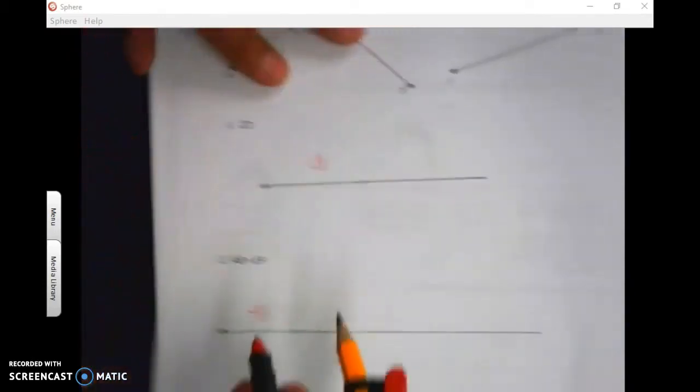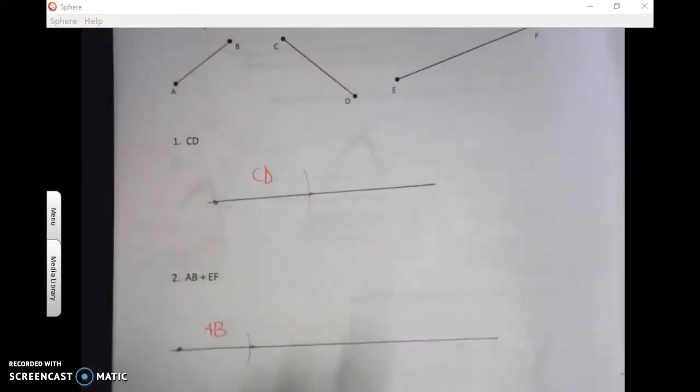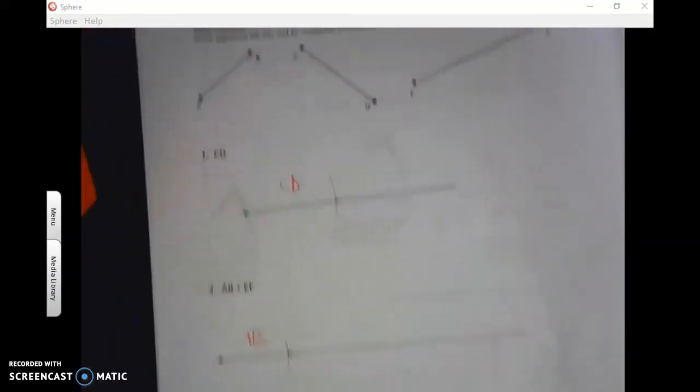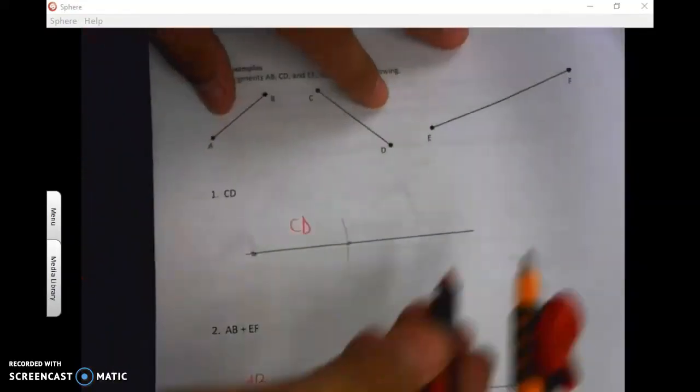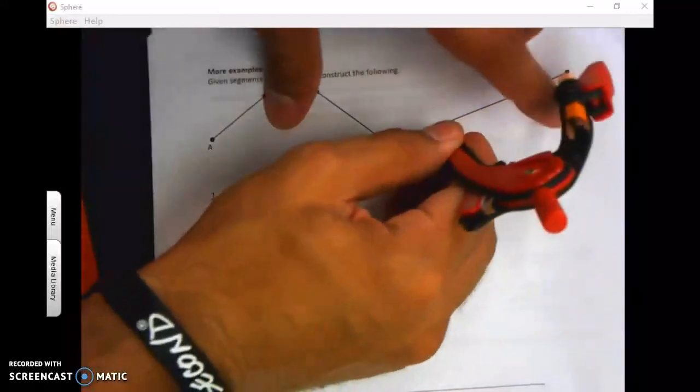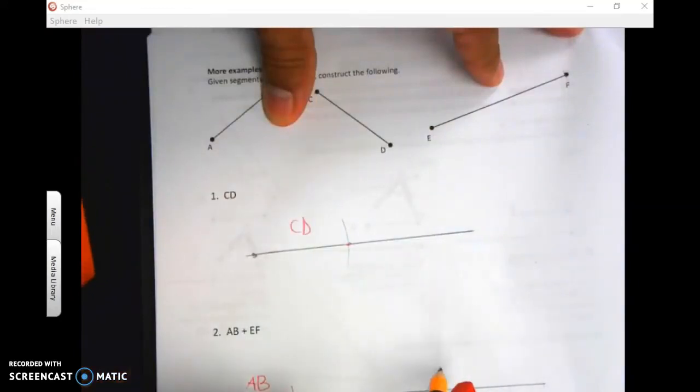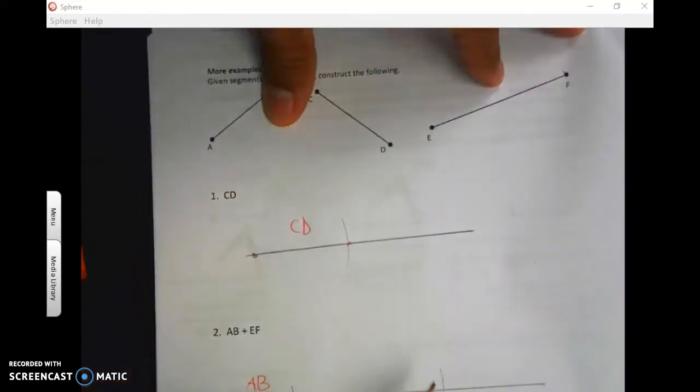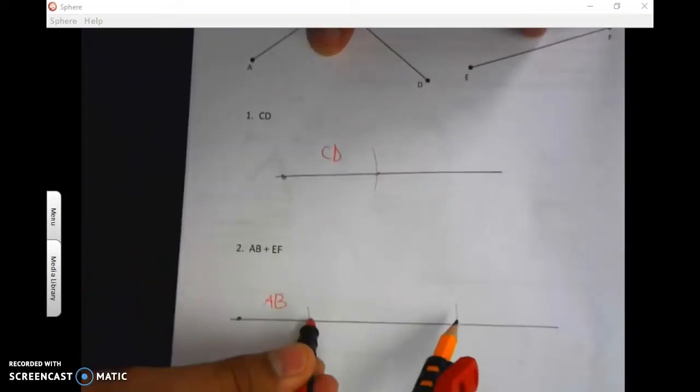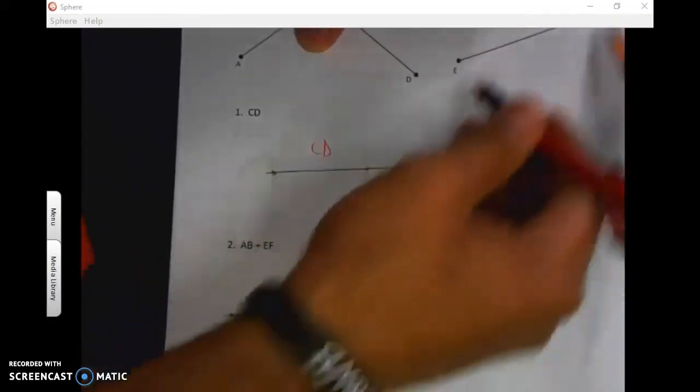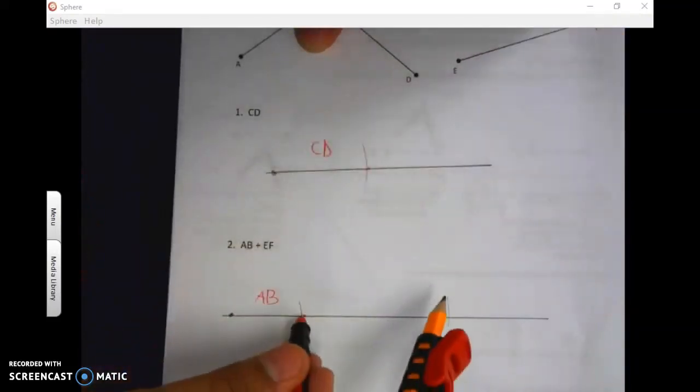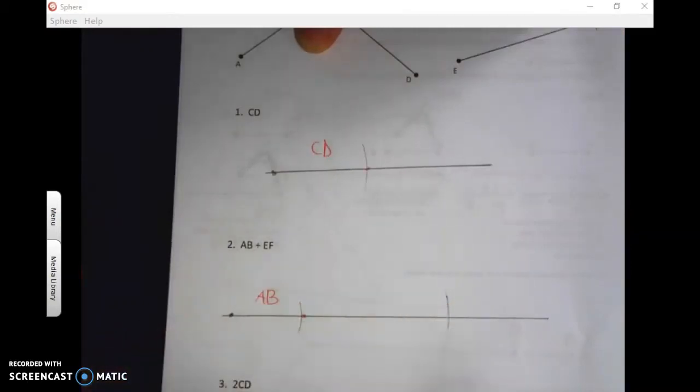And now I need to measure EF, which is over here off to the side. So for EF, I measure from here all the way over to here. That's EF, and I'm just going to put this right after AB using that B point that I had right here. Sorry, it was off screen. So EF, I measure it up here, bringing it down here, and I'm just putting it right after it on the end. So there's my AB plus EF.